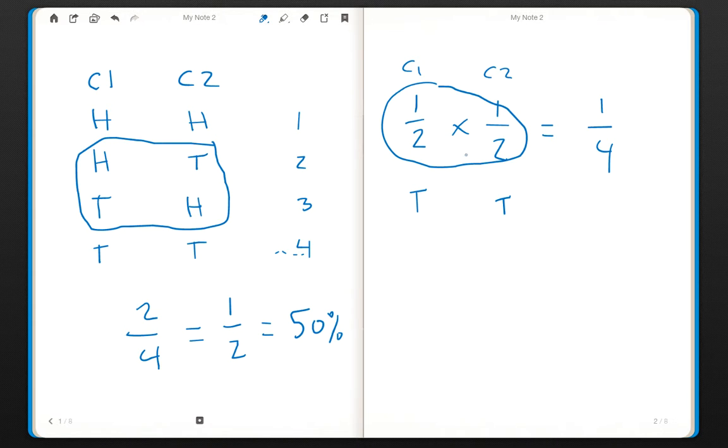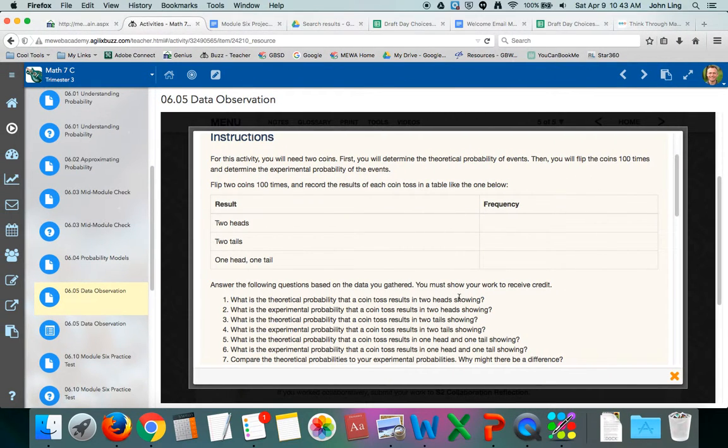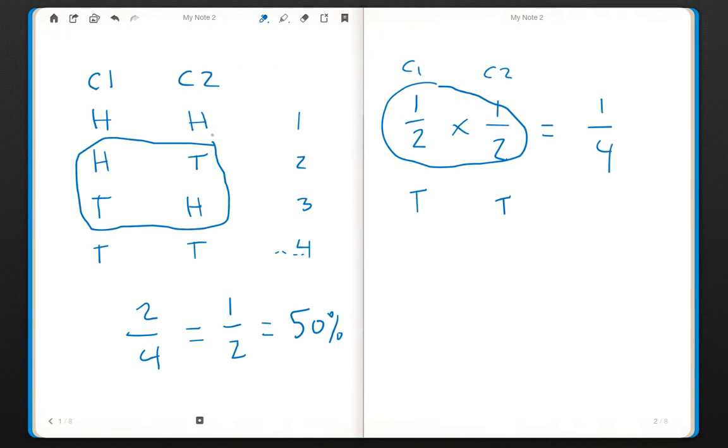So anyway, that's it. Now, with that information, you'll be able to answer these questions a little bit better. The theoretical probability that a coin toss results in two heads showing. Well, again, if you look at your table here.